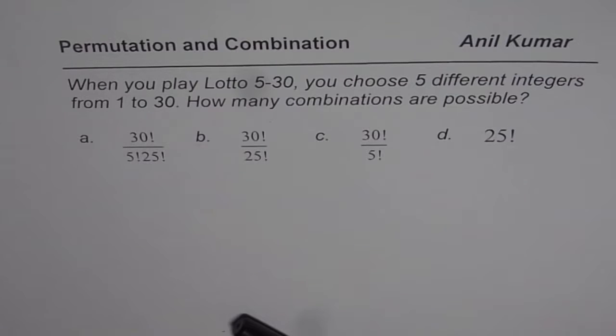The question here is when you play Lotto 5-30, you choose five different integers from one to thirty. How many combinations are possible? You are given four choices, so you can pause the video, write the correct choice, and then look into my suggestion.